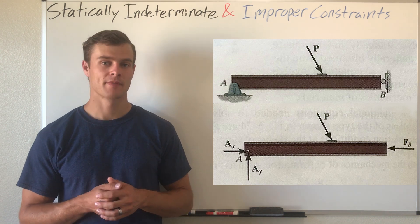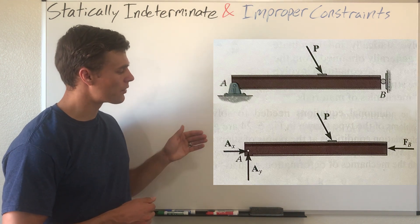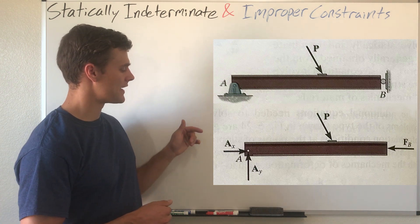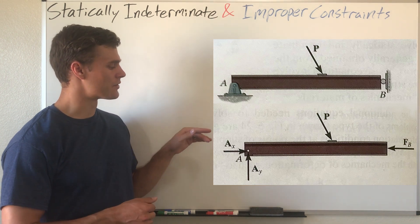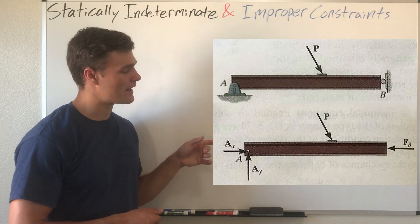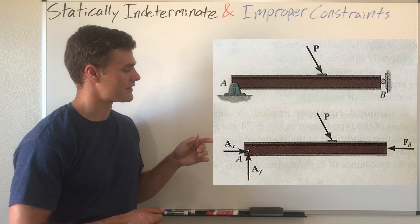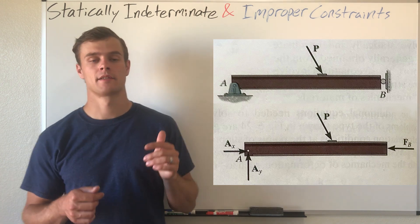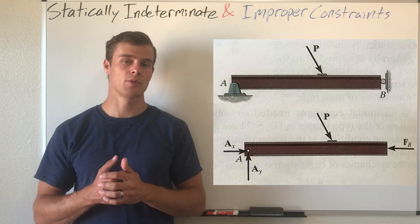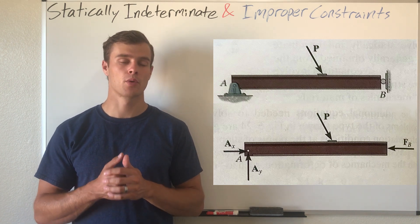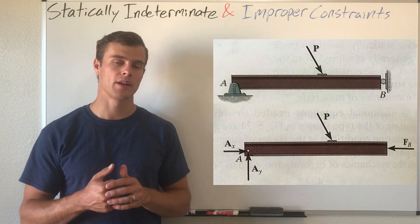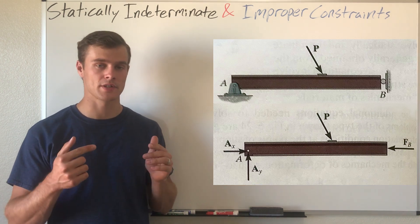You can see that the support reactions from the roller on that end and the pin at this end — all three of those support reactions pass through the same point, point A. That is causing this beam to be improperly constrained. In 2D space, if all of your support reactions' lines of action pass through the same point, that will cause it to be improperly constrained.